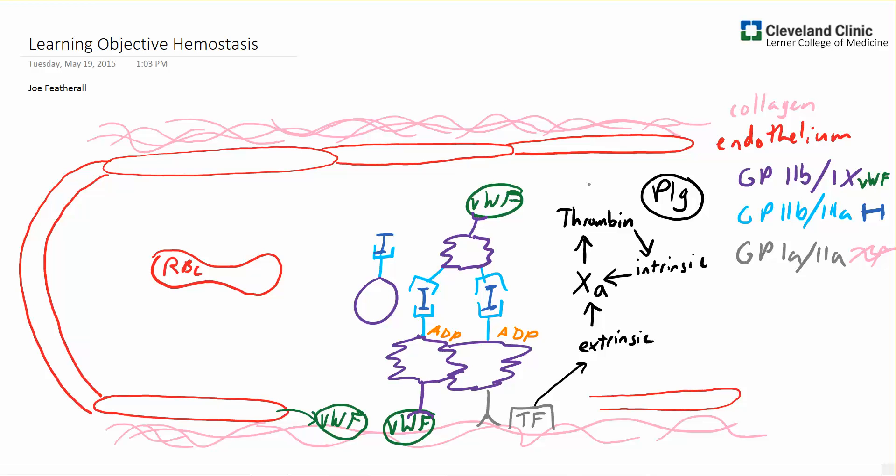This thrombin has two jobs. The first job is to activate clotting factor 13, activate, denoted by A. And the second is to take our fibrinogen and convert it to fibrin.